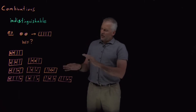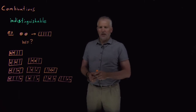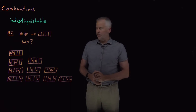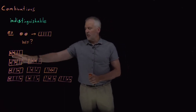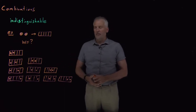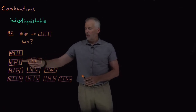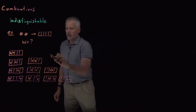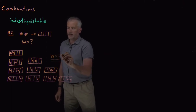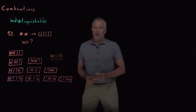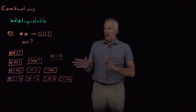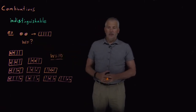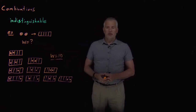These are the only possibilities that exist for where I can put these two circles into five boxes. Counting them up, I find ten different choices for how to put two indistinguishable objects into five boxes — a multiplicity of ten.